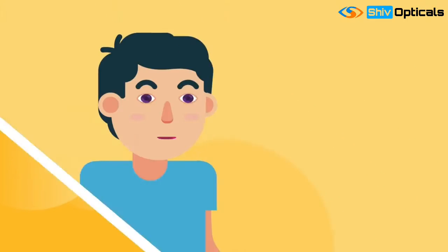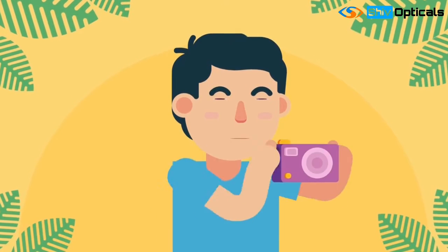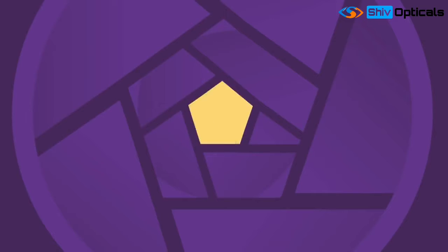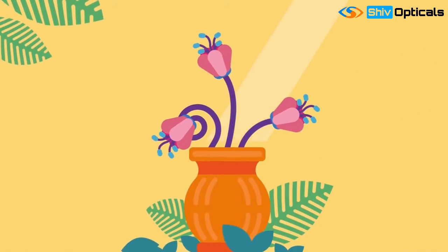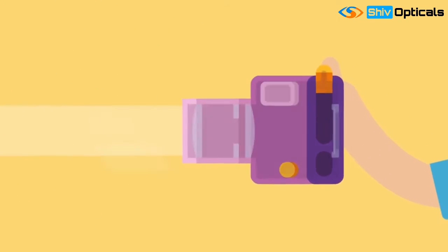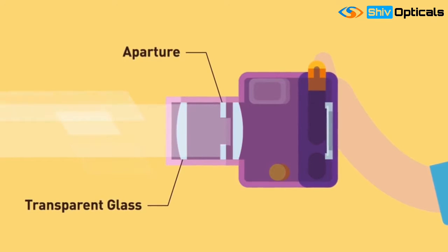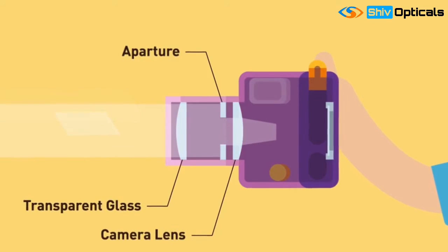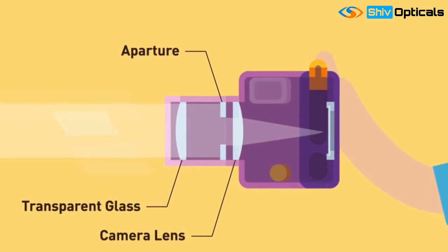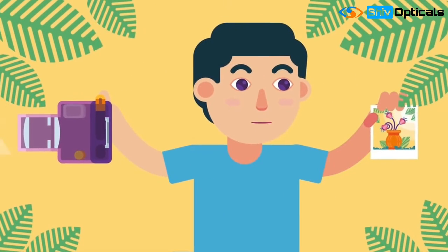Anatomy. Before we describe myopia, let's compare the eyeball to a camera for better understanding. When we take a picture, light after reflecting from an object enters the camera and passes through the following. Firstly, it passes a transparent glass in front of the aperture of the camera. Then secondly, it passes a camera lens that helps us in focusing light rays. And lastly, there is a camera film on which light is focused for a clear picture.